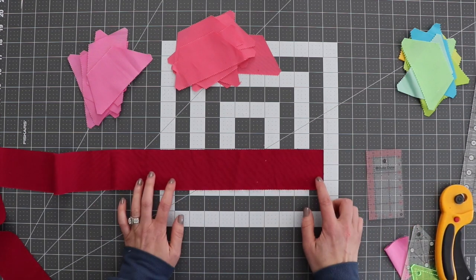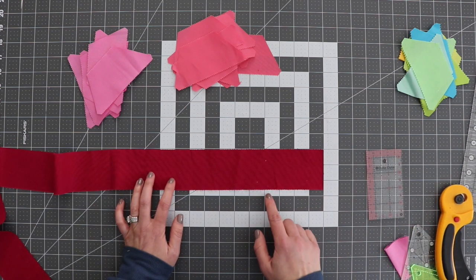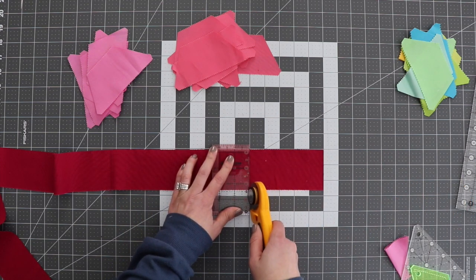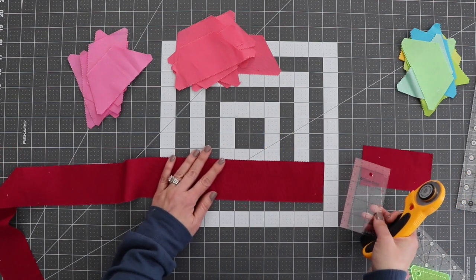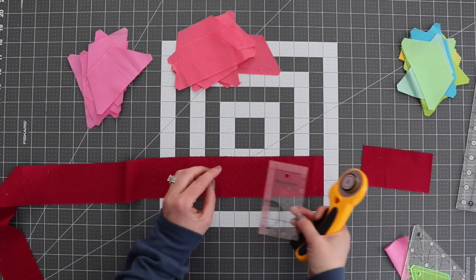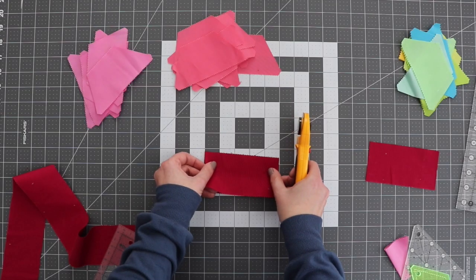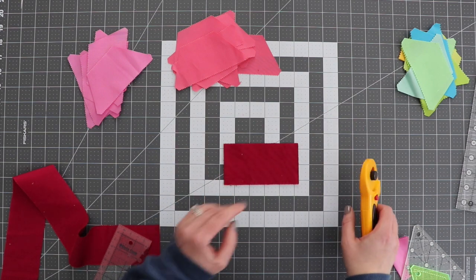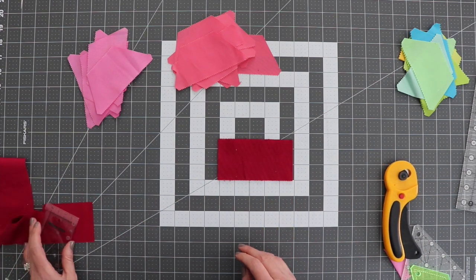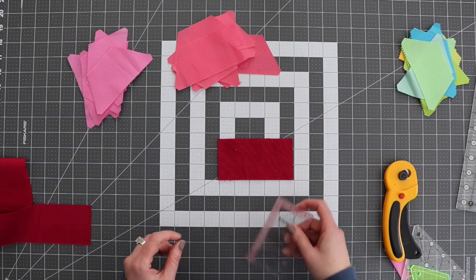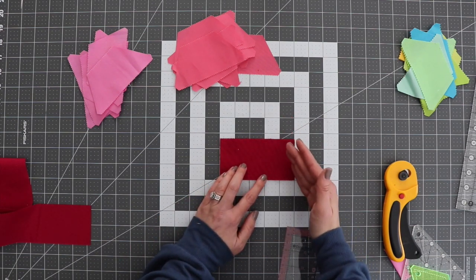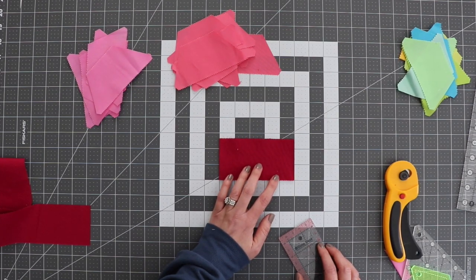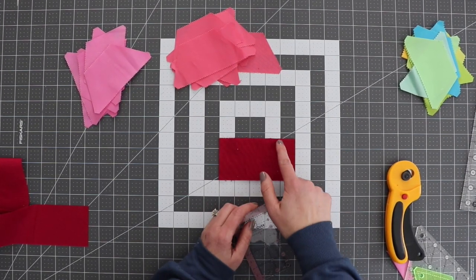So to do this method, you're going to want to cut your jelly roll strip in five inch sections. I'm just going to stack a few of these five inch sections together, and then we're going to use the markings on our mat and our ruler to do that little bit of that tapered hexagon edge.